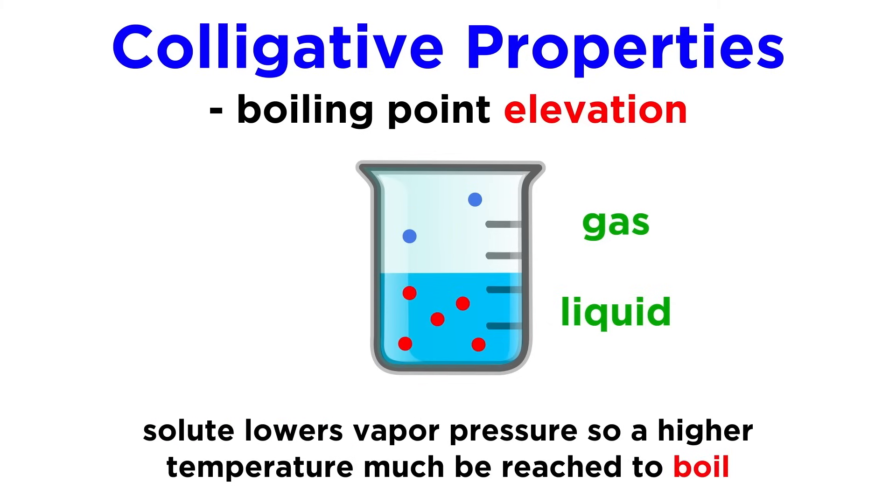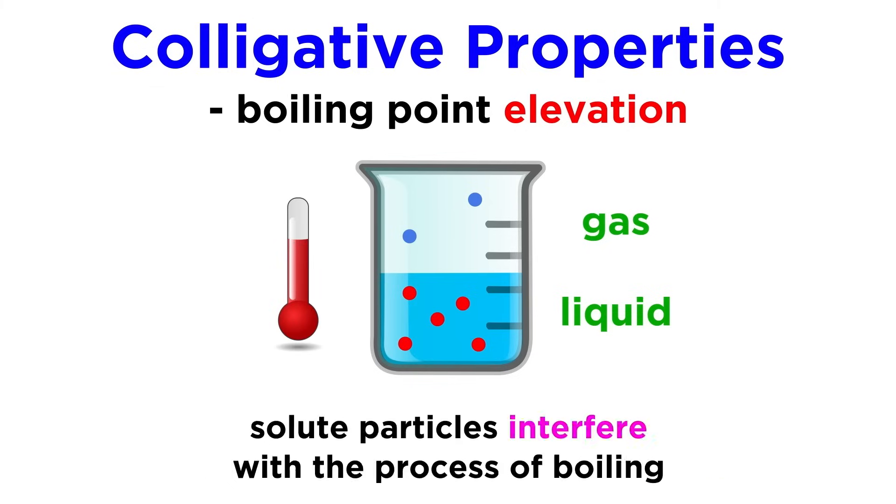if the presence of a solute lowers the vapor pressure of a solution, that means the boiling point of the solution must increase when compared to pure solvent. This is because the solute particles interfere with the process of boiling, so a slightly higher temperature must be reached for this process to occur.